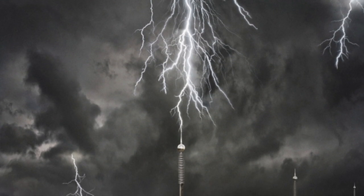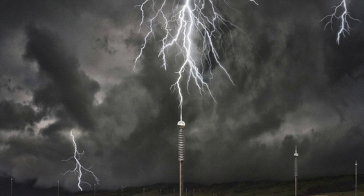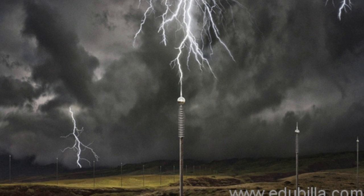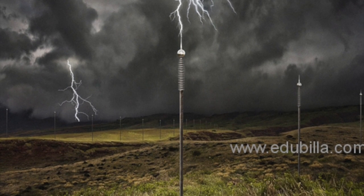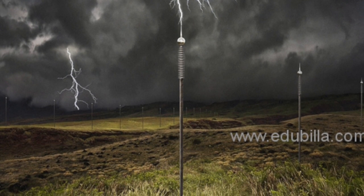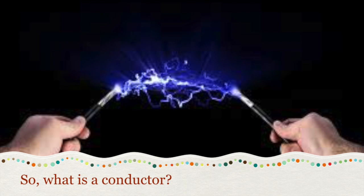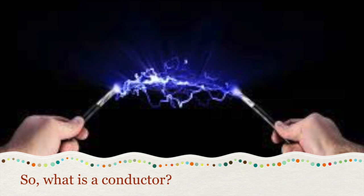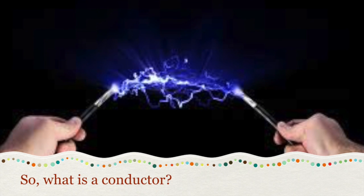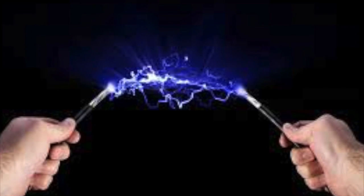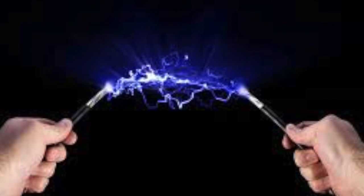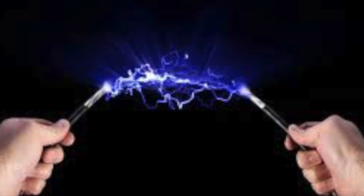A lightning rod is a metal conducting pole mounted atop a building that draws lightning's electrical charge away from the structure. A conductor is an object that allows the flow of electrons in one or more directions, distributing evenly the negative charge.